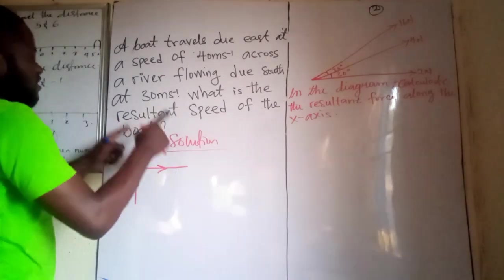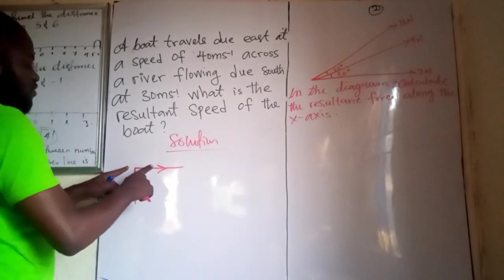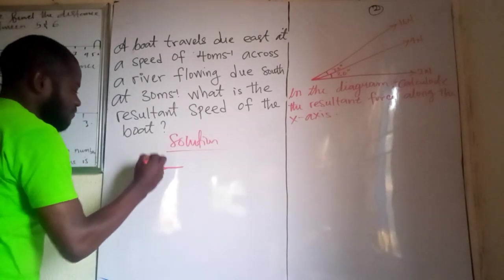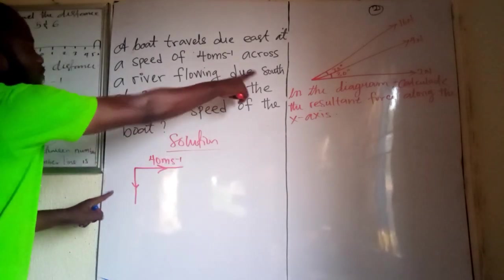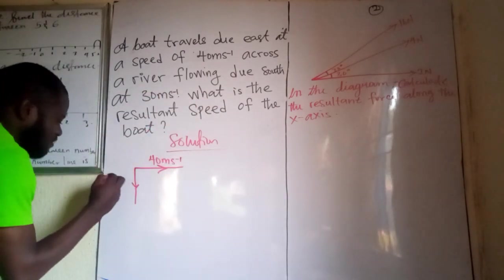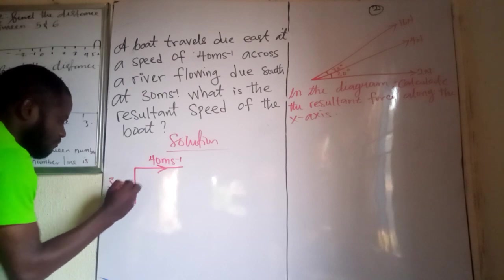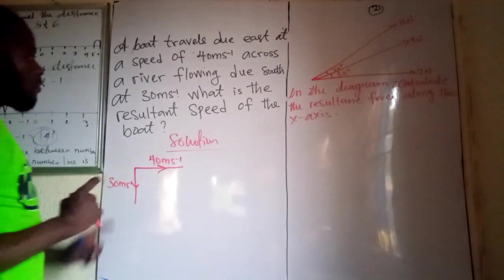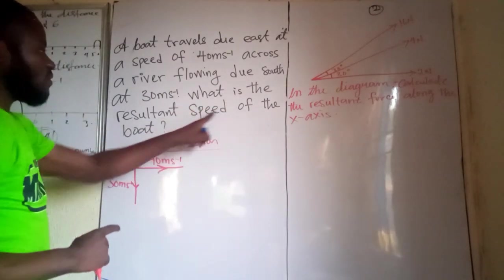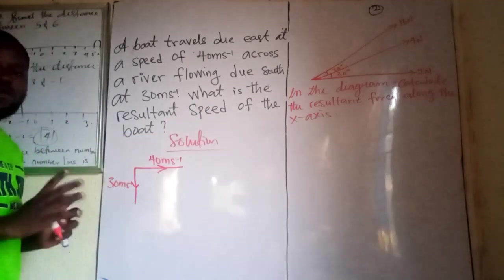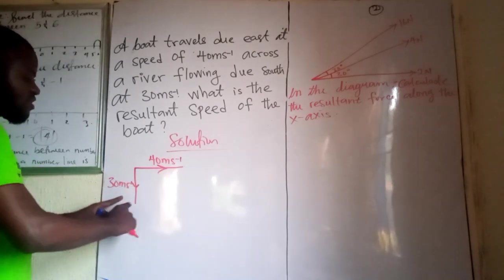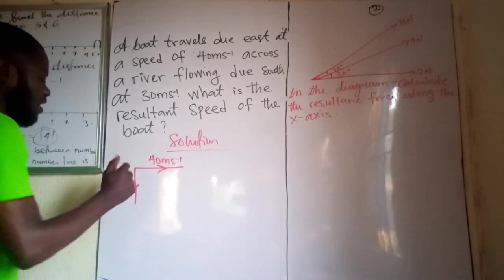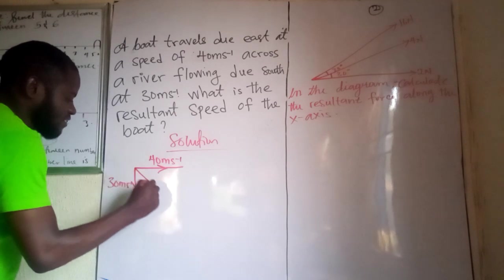So the speed in which the boat is using to travel due east is 40 meters per second. And the river flow due south with the speed of 30 meters per second. Now, the question now says what is the resultant speed of the boat? We are looking for the resultant speed. Now, the point at which these two vectors add to each other is this point here. So the resultant is this.